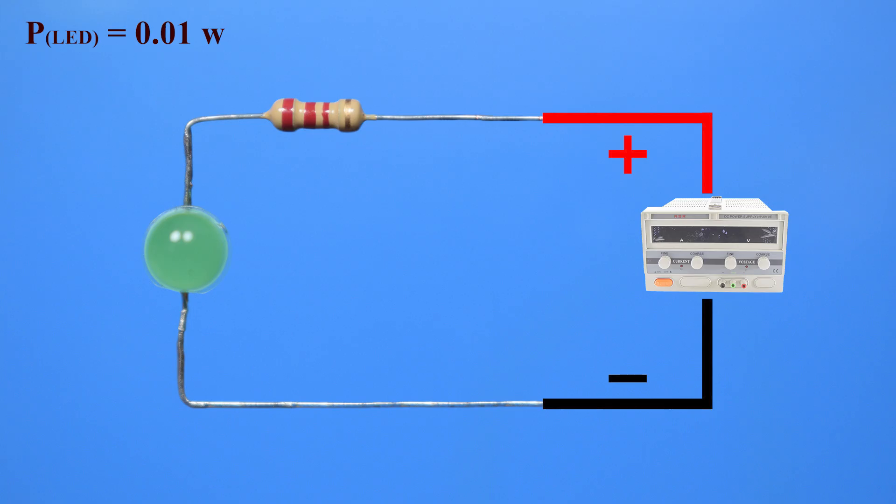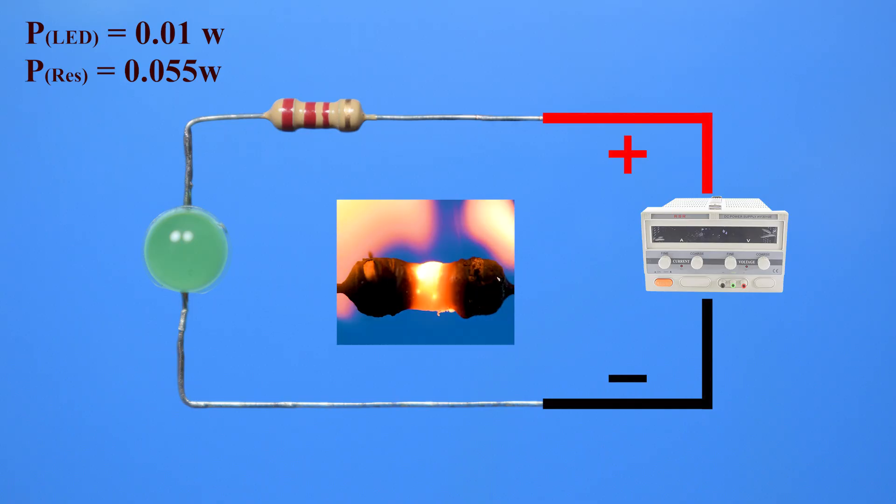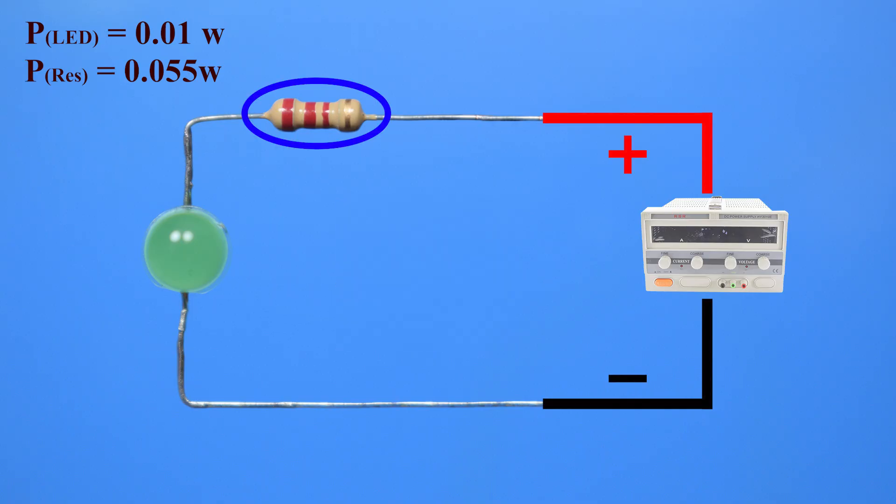Next, let's calculate the power for the resistor and explain why choosing the right power rating for a resistor is important. For the resistor, P R equals V times I. P resistor equals 0.055 watt. So we can see that the resistor consumes about 55 milliwatts of power, and this power is released as heat. When choosing a resistor, its rated power should be higher than the actual power to prevent it from getting too hot or burning out. Here, we have a quarter-watt resistor, which is 250 milliwatts, so it's completely safe. We could even use lower power resistors, 125 milliwatts resistor, safely in this circuit.